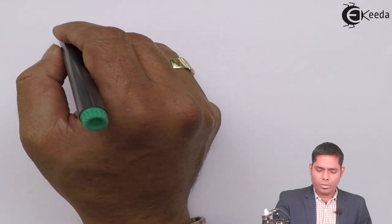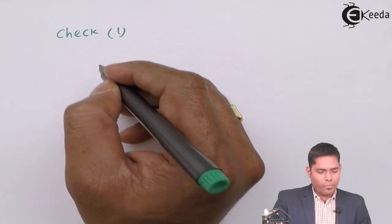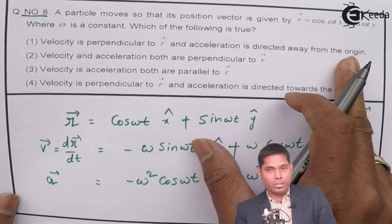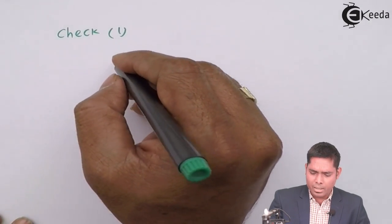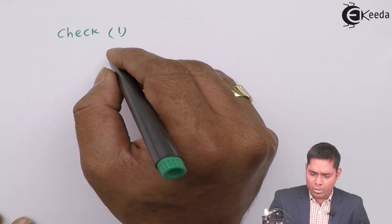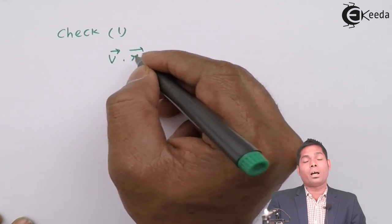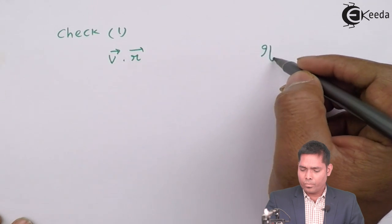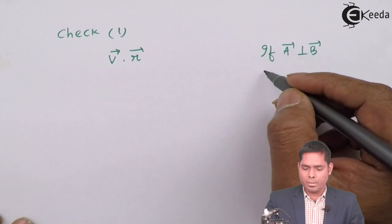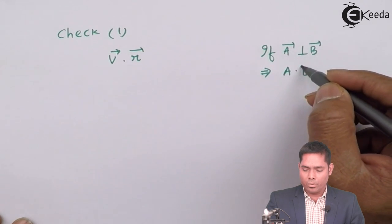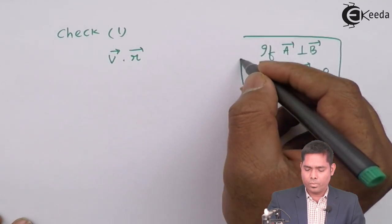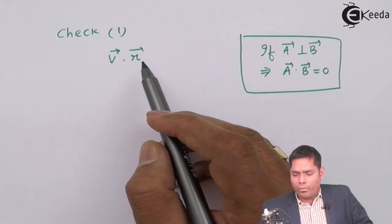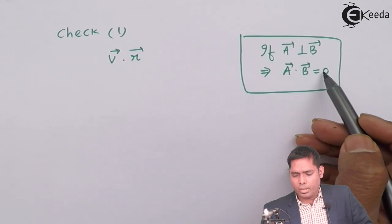Let us take option number one. It says velocity is perpendicular to r and acceleration is directed away from the origin. To check this, I will find the dot product of velocity and r. If it is zero, that means they are perpendicular. We know that if vector a is perpendicular to vector b, the dot product will be zero, because a·b = ab·cos(θ), and with θ = 90°, the whole thing will be zero.